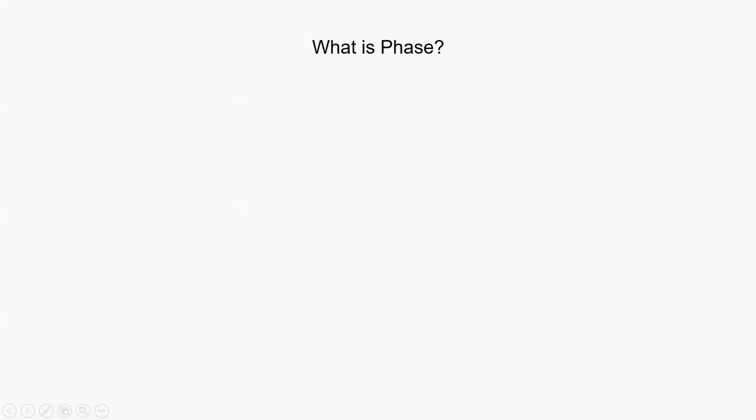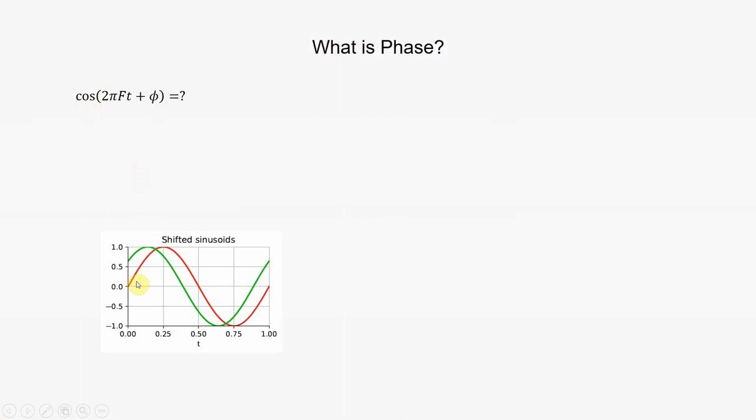First we need to know what phase means. We write an expression φ or θ. In cosine expression most people know that it shifts the sinusoid by some amount. For example, this is a sine wave and this is a shifted sinusoid which is representing a particular phase.